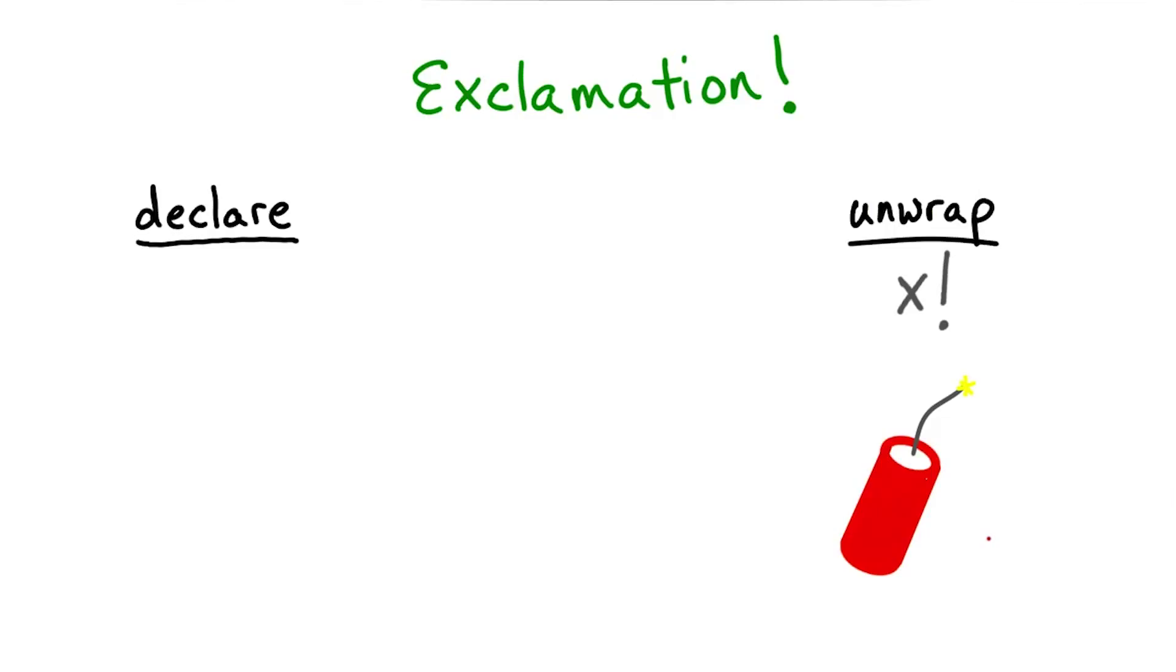Okay, nothing explodes, but it does throw a fatal error. There's no safe way to unwrap with an exclamation point. When you choose to unwrap with an exclamation point, you're saying that you want the program to crash if the value inside is nil. It communicates to your code readers that you're confident there will not be a nil value in the optional.